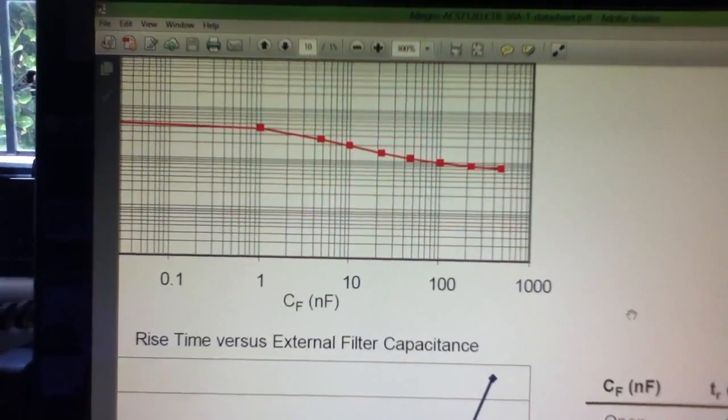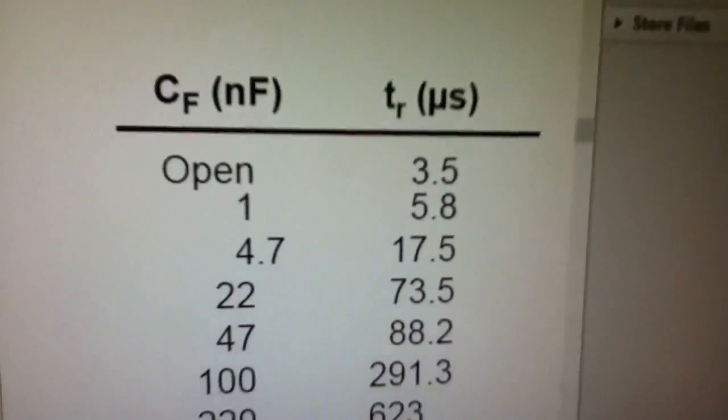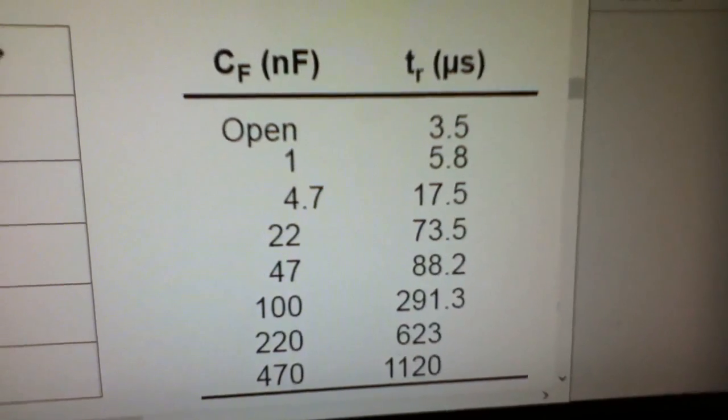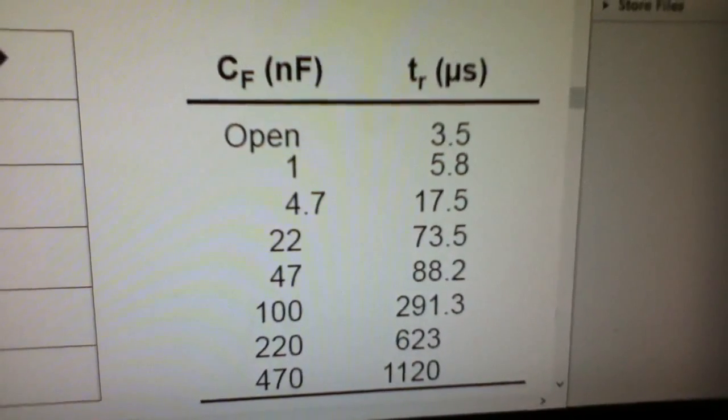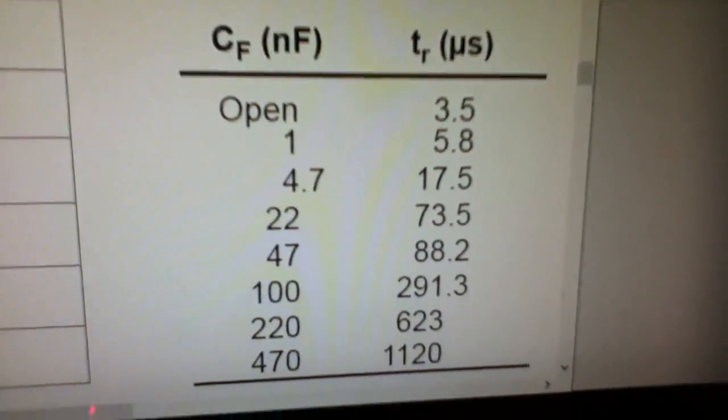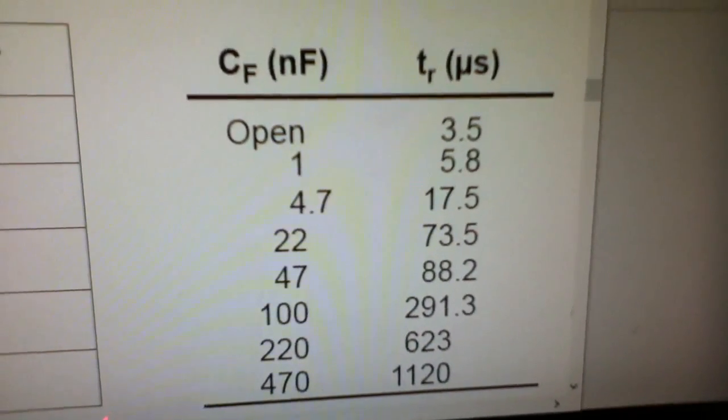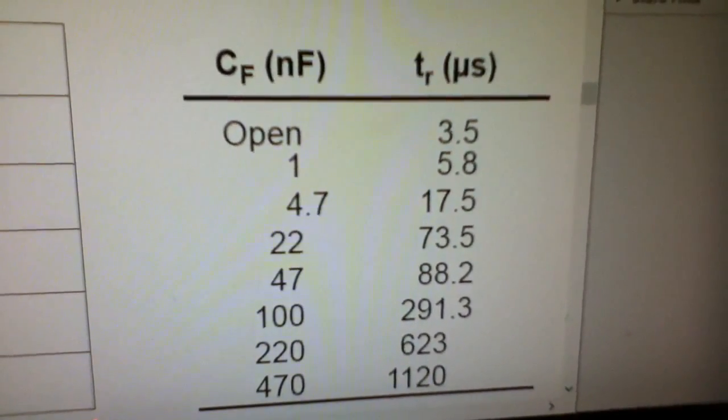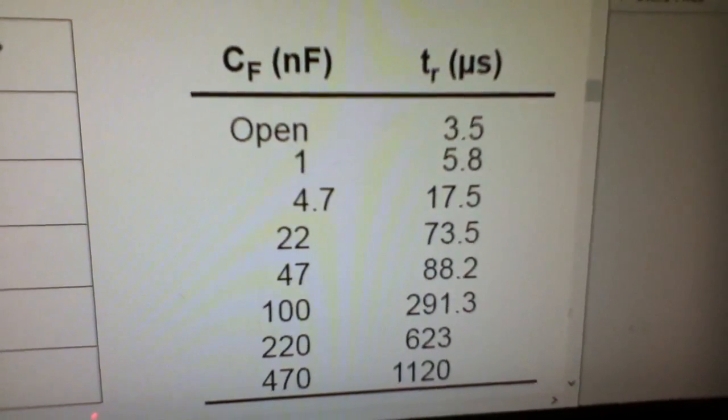You don't get something for nothing - there is a trade-off. If you look at this table, you'll see that by raising the filter capacitor value it affects the rise time. With the 1 nanofarad the rise time is 5.8 microseconds. With the big 470 nanofarad capacitor the rise time is 1120 microseconds - 1.1 milliseconds. That means you'd be limited to taking current measurements less than a thousand times a second.